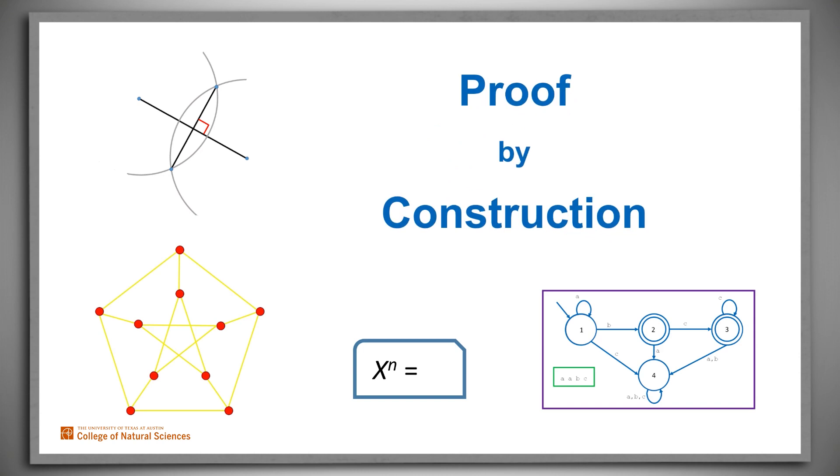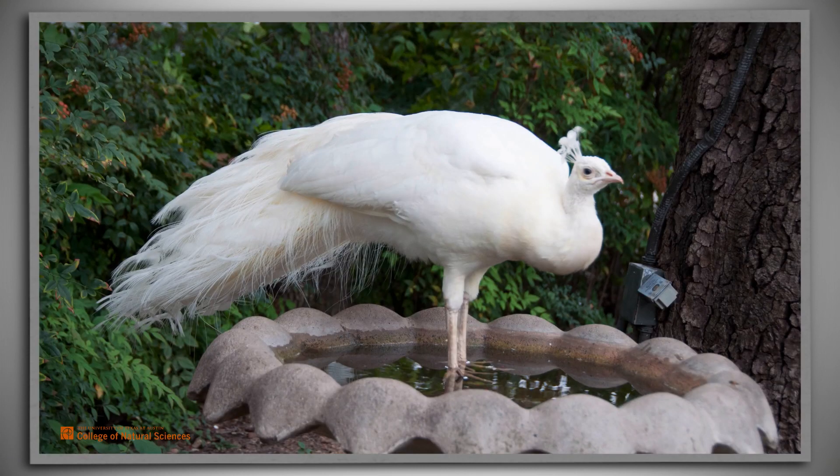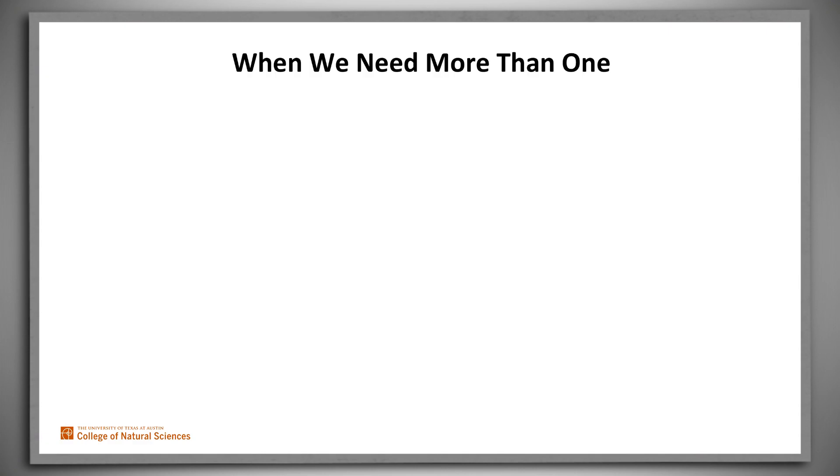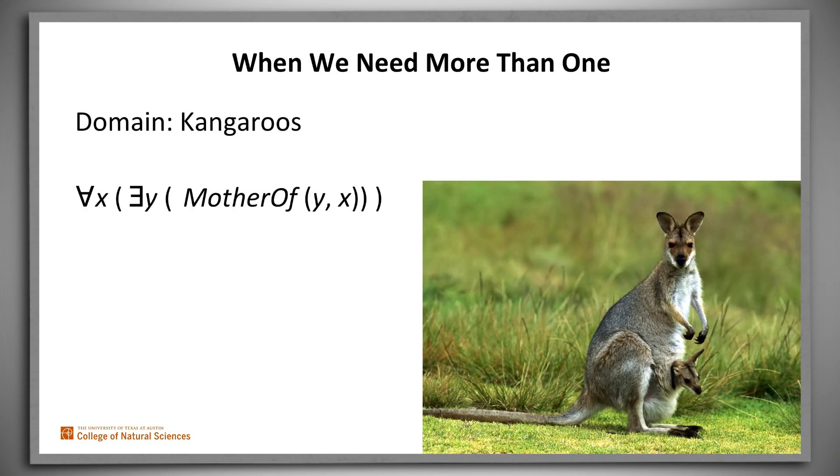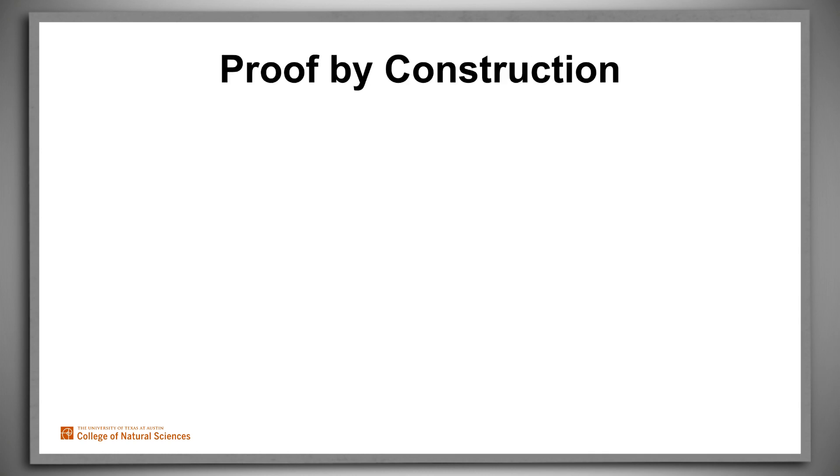If we want to prove that some individual thing exists, it suffices just to exhibit one. For example, white peacocks exist. But often we want to prove not just that one individual exists, but rather that for every element of some relevant set, there exists something that's related to it in some way. For example, every integer has a successor or every kangaroo had a mother. In these cases, we can't exhibit just a single object. Instead, we can try a proof by construction.